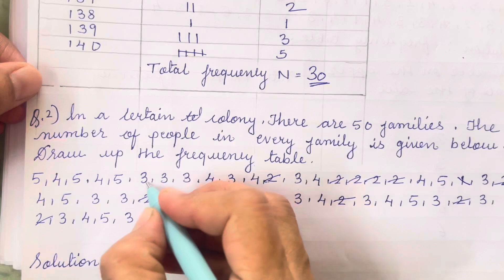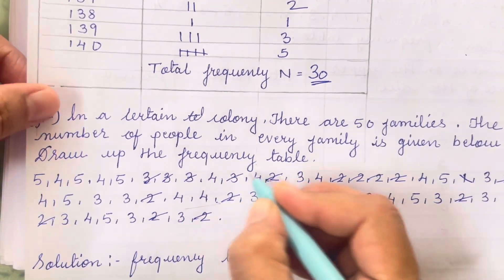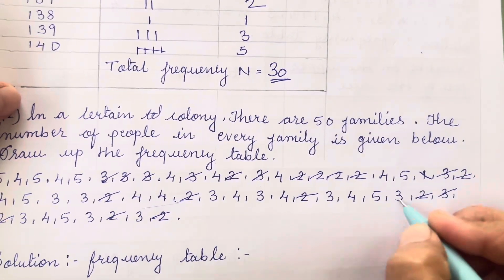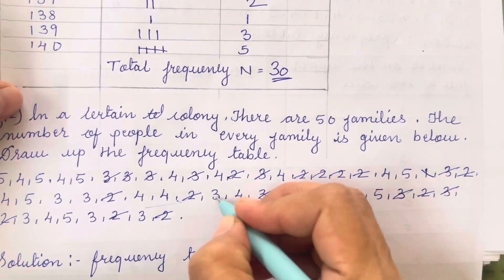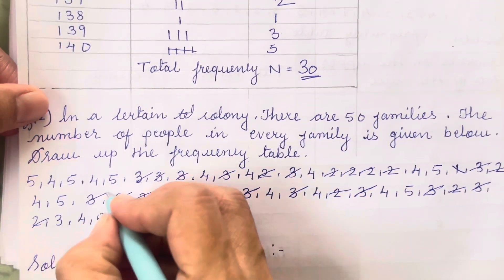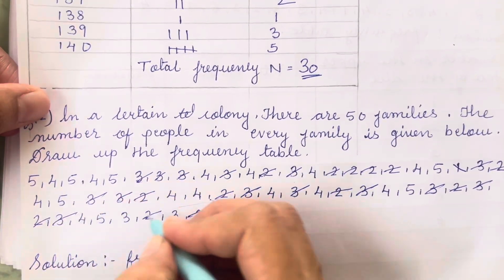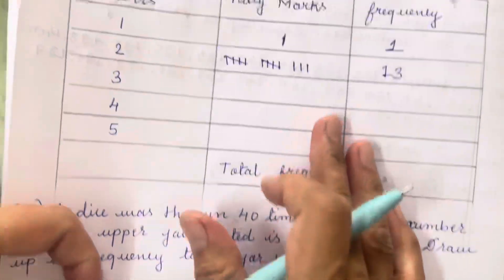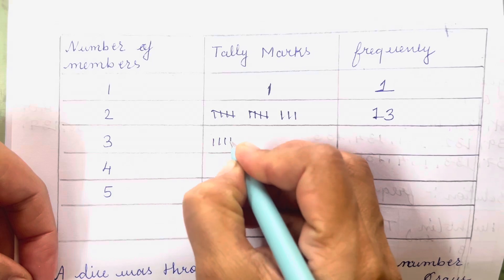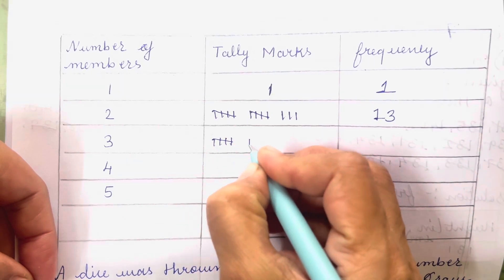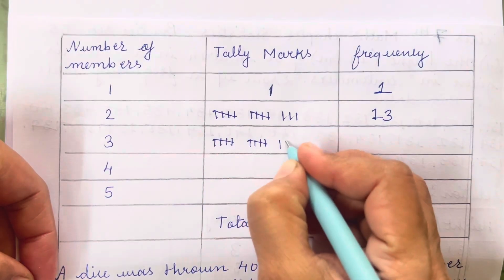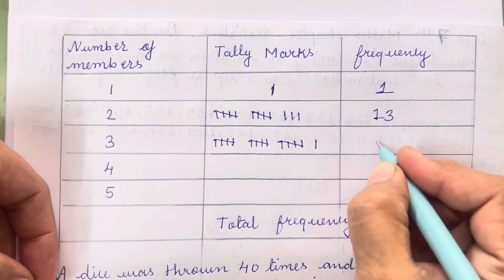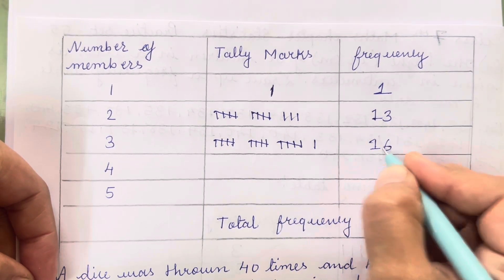Then for 3: counting gives 1, 2, 3, 4, 5, 6, 7, 8, 9, 10, 11, 12, 13, 14, 15, 16 — so the frequency is 16.